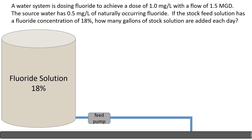The source water has 0.5 milligrams per liter of naturally occurring fluoride. Fluoride is the only type of problem where you actually have some of the chemical you're adding already in the water, and here it's due to naturally occurring fluoride. The stock feed solution has a fluoride concentration of 18%, and we need to find how many gallons of stock solution are added each day. Our fluoride solution tank has 18% fluoride in it.